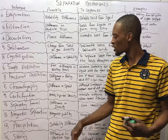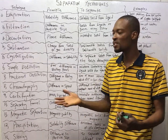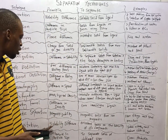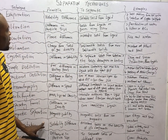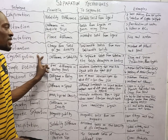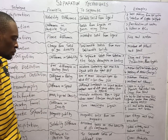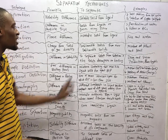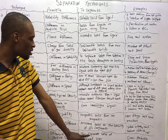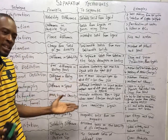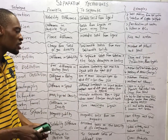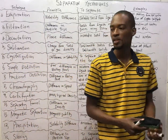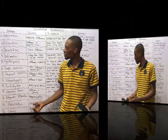Precipitation works based on the principle of solubility difference — the same as crystallization. Precipitation is used to separate a mixture based on the solubility of its components. An example is a solution of silver nitrate and a solution of sodium chloride — you use precipitation to separate them.